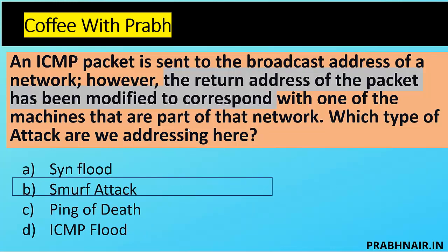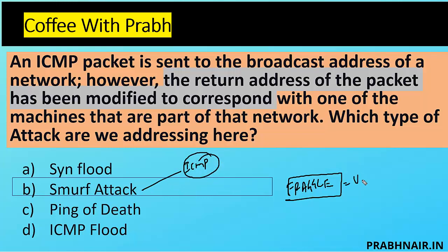In a Smurf attack, the attacker spoofs one machine's IP and sends ICMP echo requests to thousands of hosts, and those hosts all reply to that spoofed IP. It's like using a friend's name to borrow money from 1,500 people — then 1,500 people go back to your friend asking for repayment. There is also the Fraggle attack, another name for a similar concept, but the difference is that in a Smurf attack we send ICMP echo packets, whereas in a Fraggle attack we send UDP packets to destination port 7. Both occur at Layer 4.